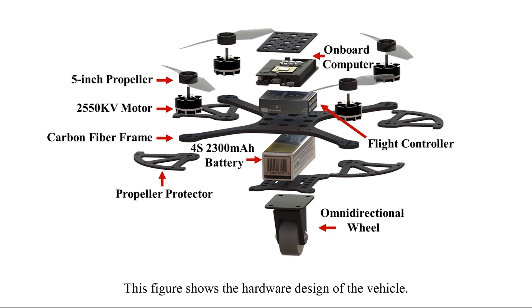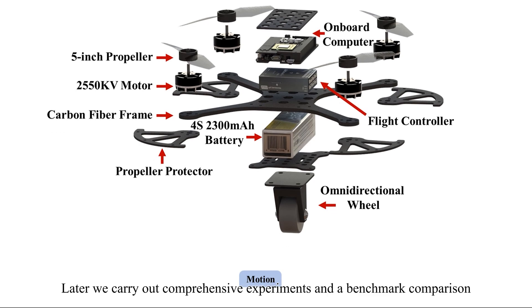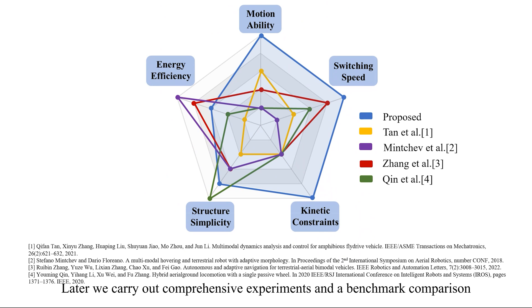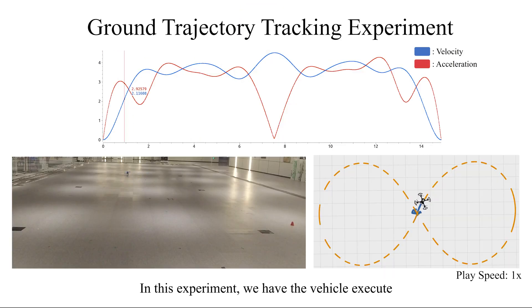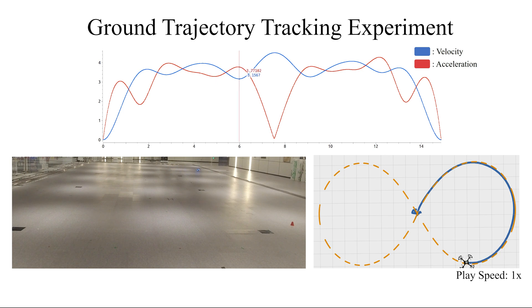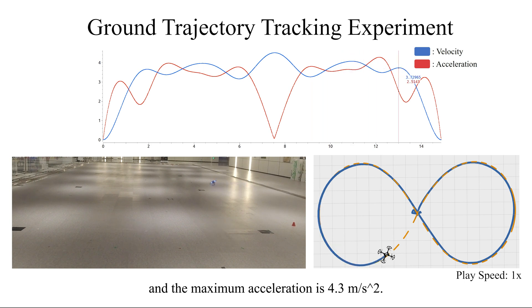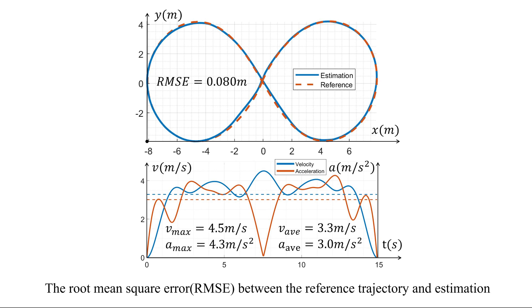It has high trajectory tracking ability, can conduct smooth mode switching, has loose kinetic constraints, and has a concise mechanism. This figure shows the hardware design of the vehicle. Later, we carry out comprehensive experiments and a benchmark comparison to validate the system's overall performance. In this experiment, we have the vehicle execute an H-shaped trajectory on the ground. The maximum velocity is 4.5 meters per second and the maximum acceleration is 4.3 meters per second squared. The root mean square error (RMSE) between the reference trajectory and estimation is 0.08 meter, which shows the system's outstanding trajectory tracking ability.